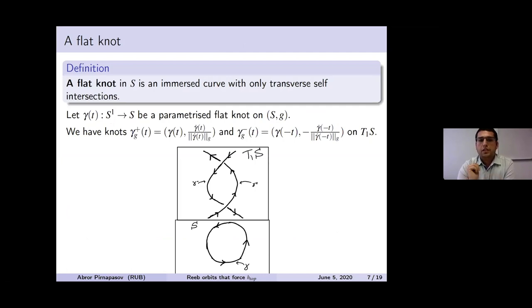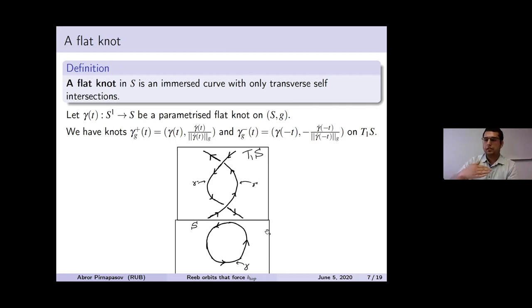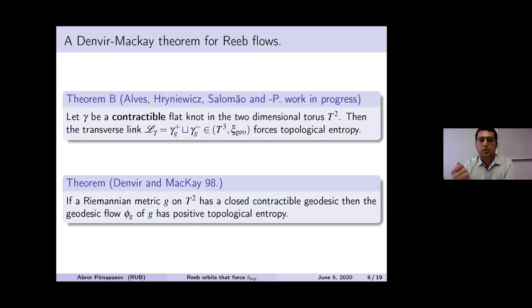A flat knot in a surface is an immersed curve with only transverse self-intersections. We parameterize the flat knot and lift it to the unit tangent bundle with positive orientation and negative orientation. If you take a simple embedded contractible transverse knot, its lift to the unit tangent bundle takes this form — above and below are identified in the unit tangent bundle. The theorem says: if you take any contractible flat knot in T^2, then the union of the positive and negative lifts forces topological entropy in T^3 with the standard contact structure.